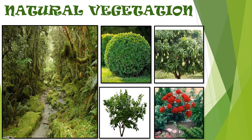Vegetation in India can be divided into five types: tropical evergreen forest, tropical deciduous forest, thorny bushes, mountain vegetation, and mangrove forest.